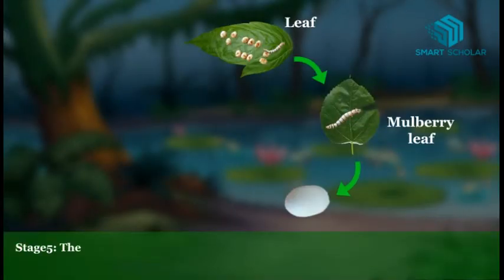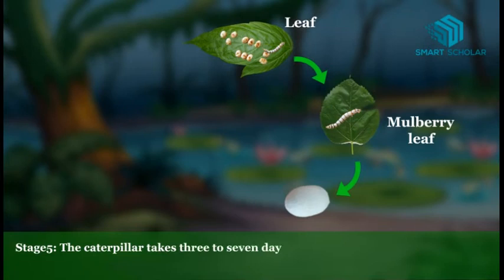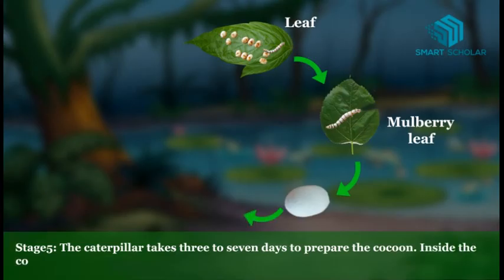Stage 5: The caterpillar takes 3-7 days to prepare the cocoon. Inside the cocoon, the caterpillar changes into a pupa.